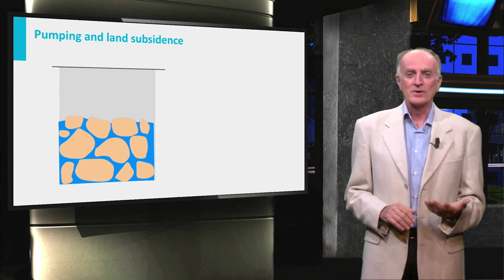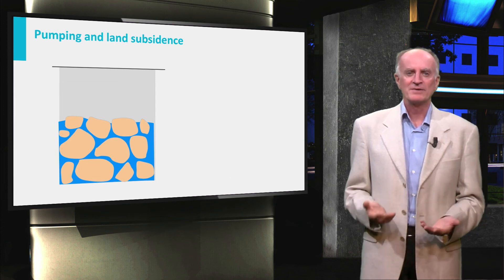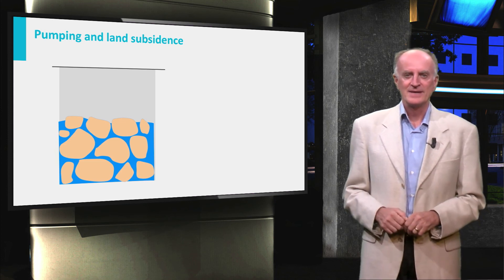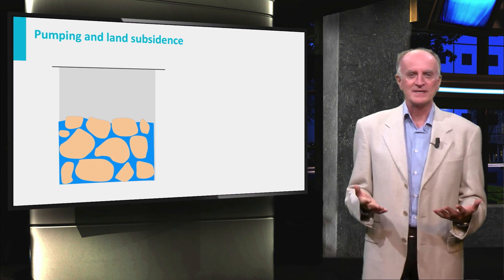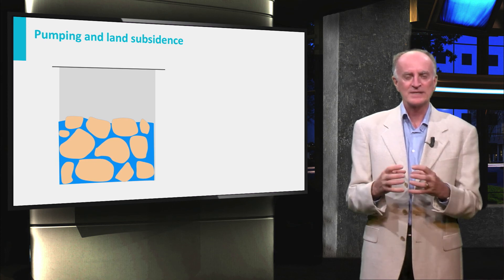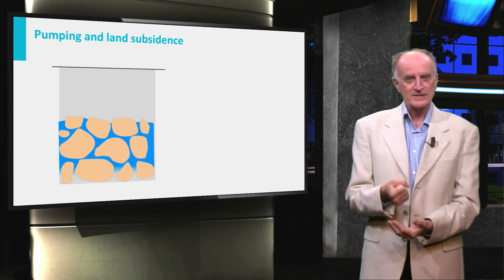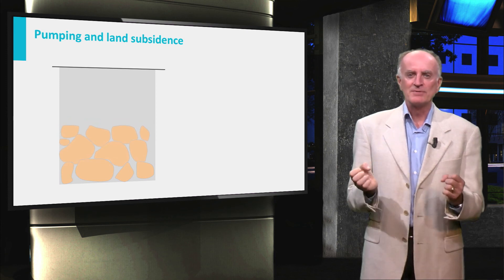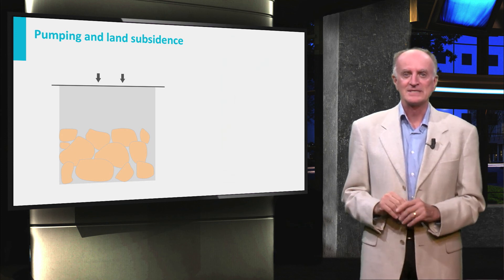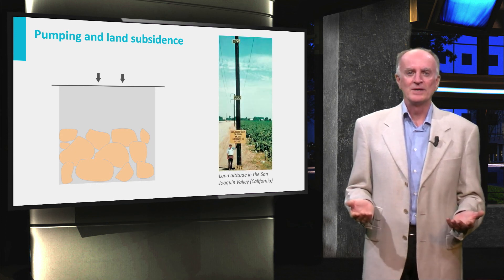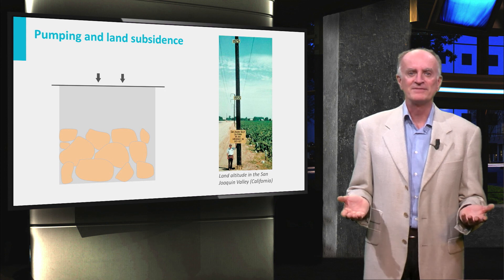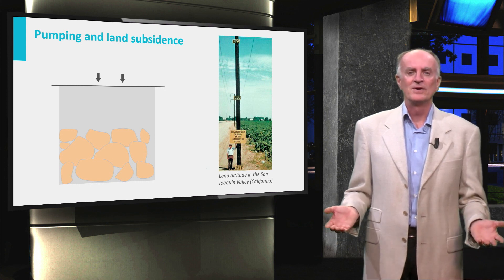Similarly to, and probably more than, what we have seen for unconfined aquifers, a further important consequence of overpumping is land subsidence. When the sands of the aquifer are water-saturated, the water exerts a pressure on the grains, giving them some distance from each other. When water is extracted, the grains move to a closer compaction, producing land subsidence at the surface. As you can see from the measurement on the pole, the land surface in the agricultural region of the San Joaquin Valley has descended by tens of feet within 50 years as a consequence of over-extraction.